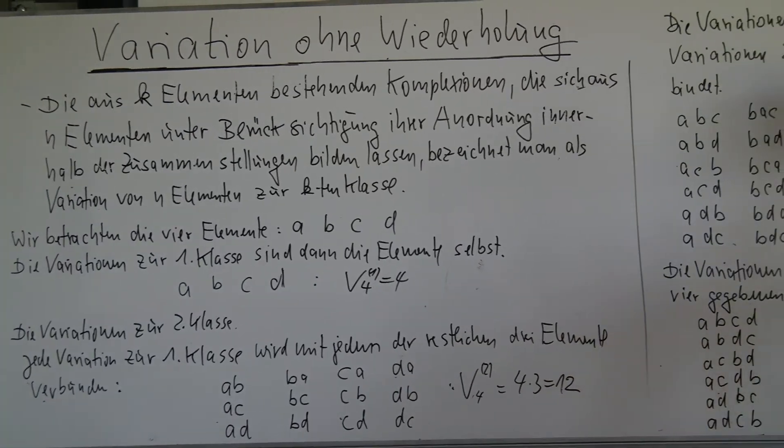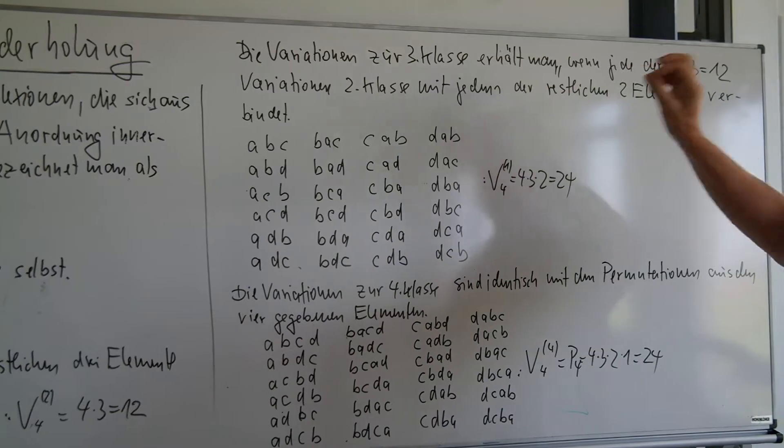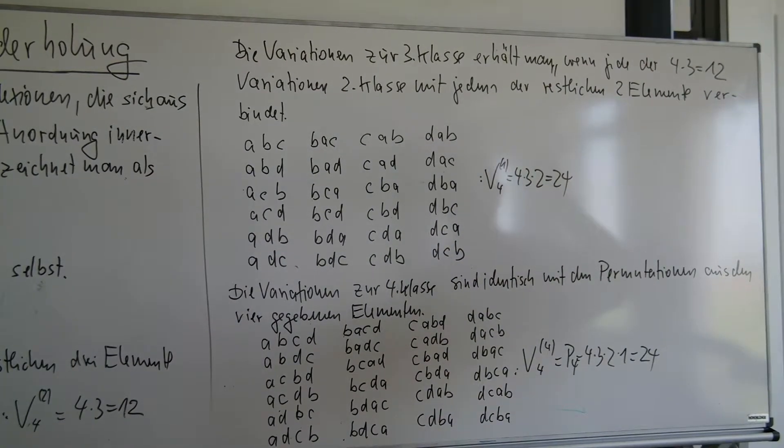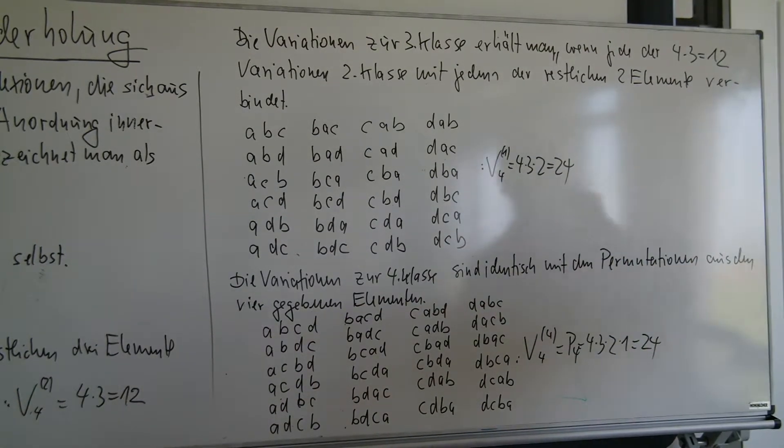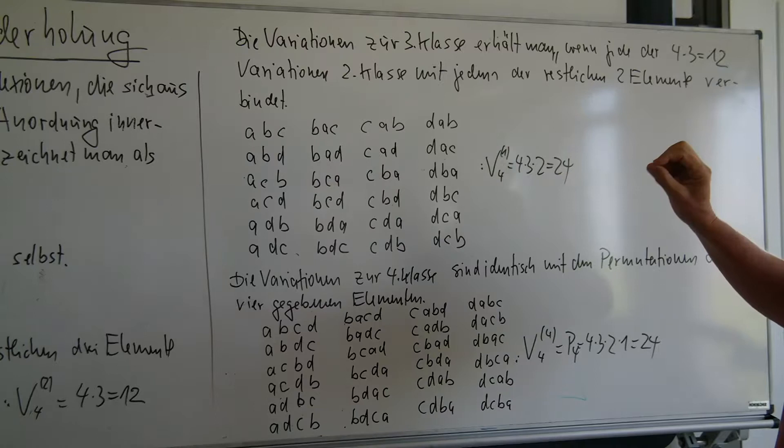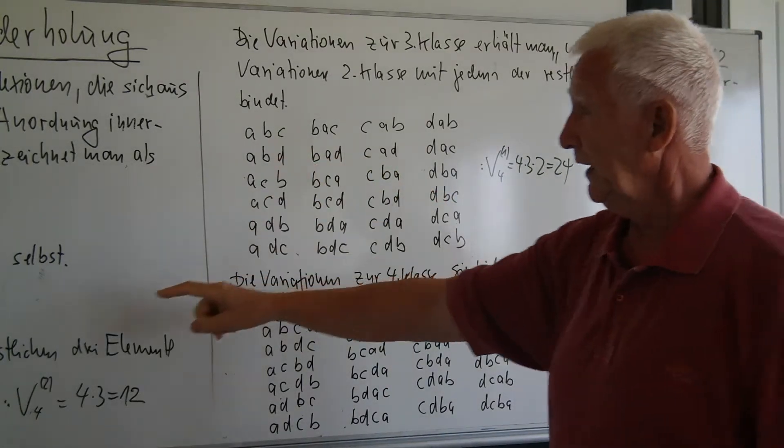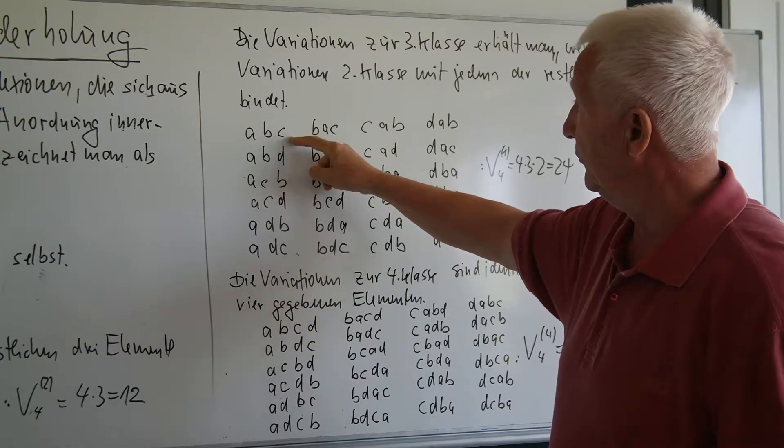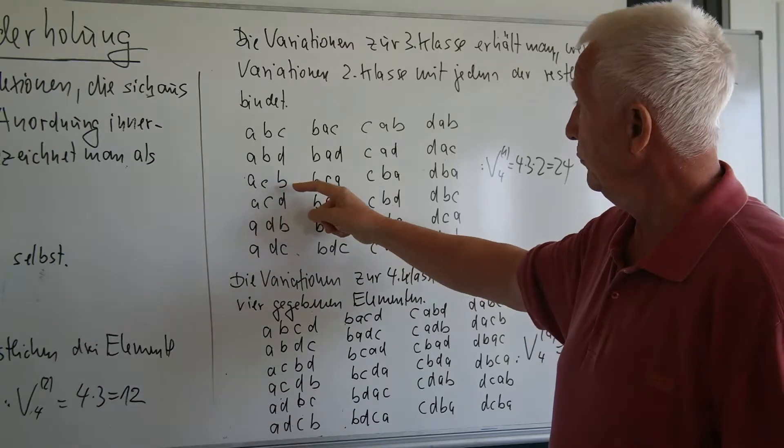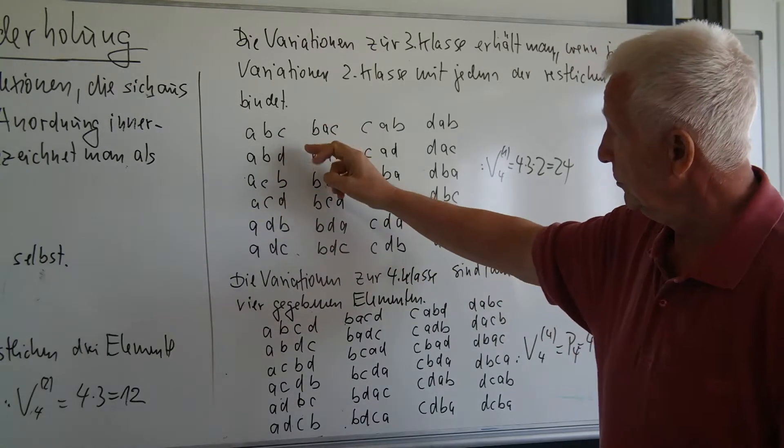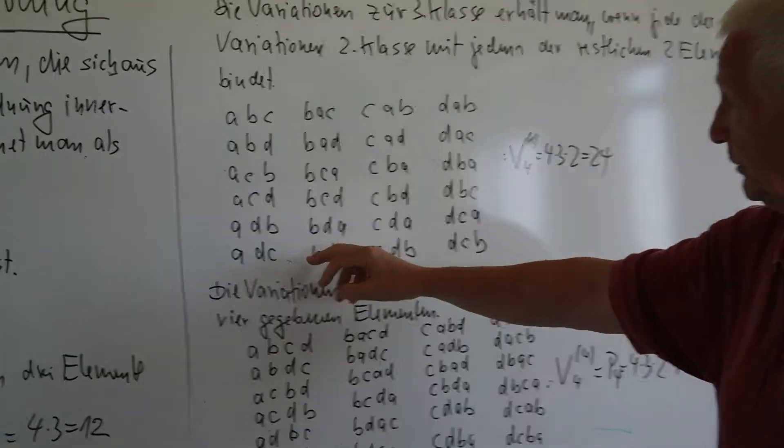Gehen wir weiter, wir betrachten die Variation zur dritten Klasse. Die erhalten wir jetzt, wenn wir jede dieser zwölf Elemente, die wir dort haben, das heißt die zwölf Variationen zur zweiten Klasse mit jedem der restlichen zwei Elemente verbinden. Also wir haben AB, das kann ich nur verbinden mit C und mit D, dann AC mit B und mit D. Geht die Kamera mal hier genau drauf.